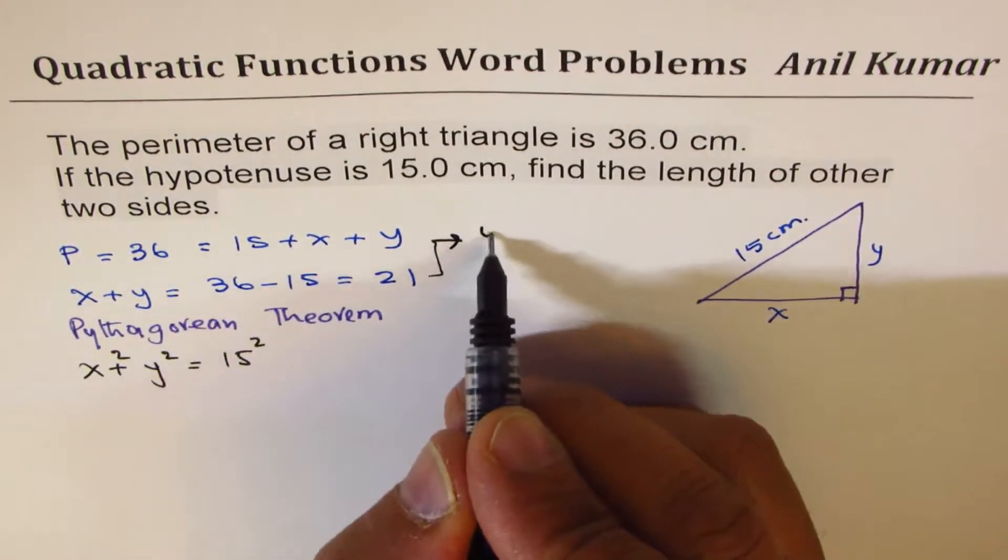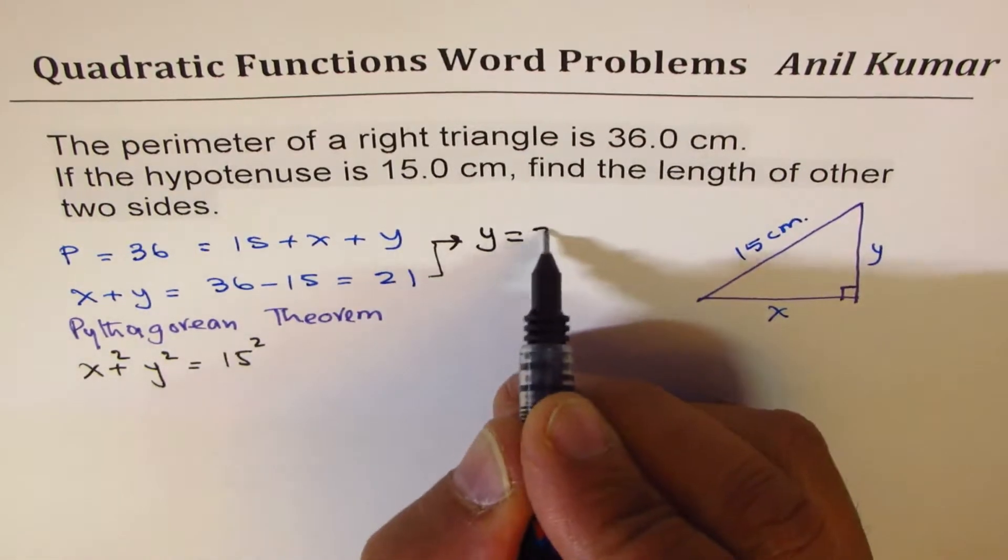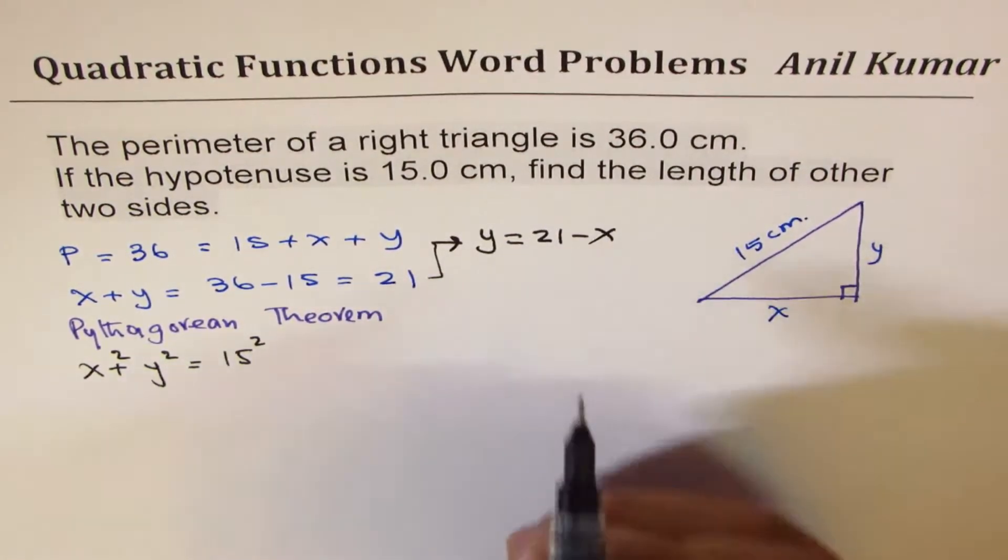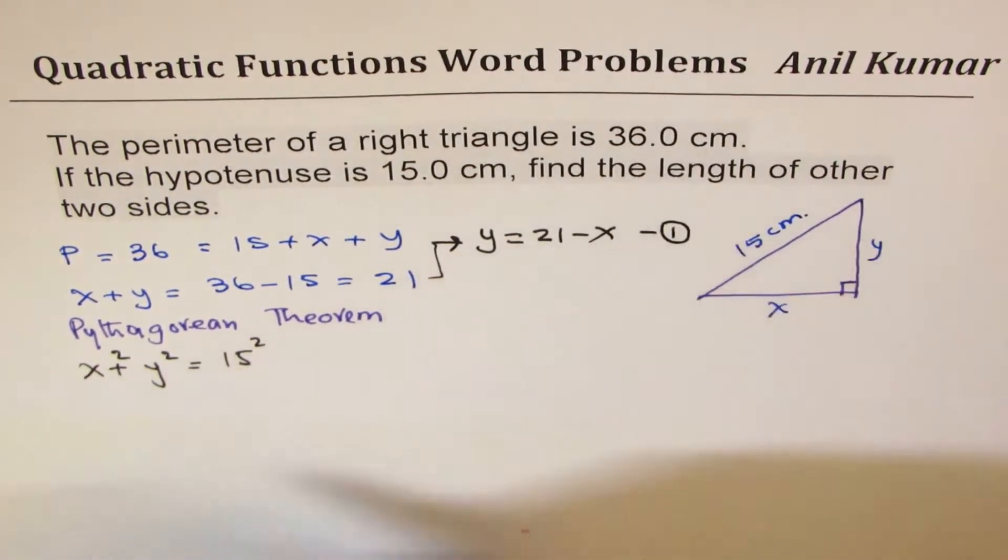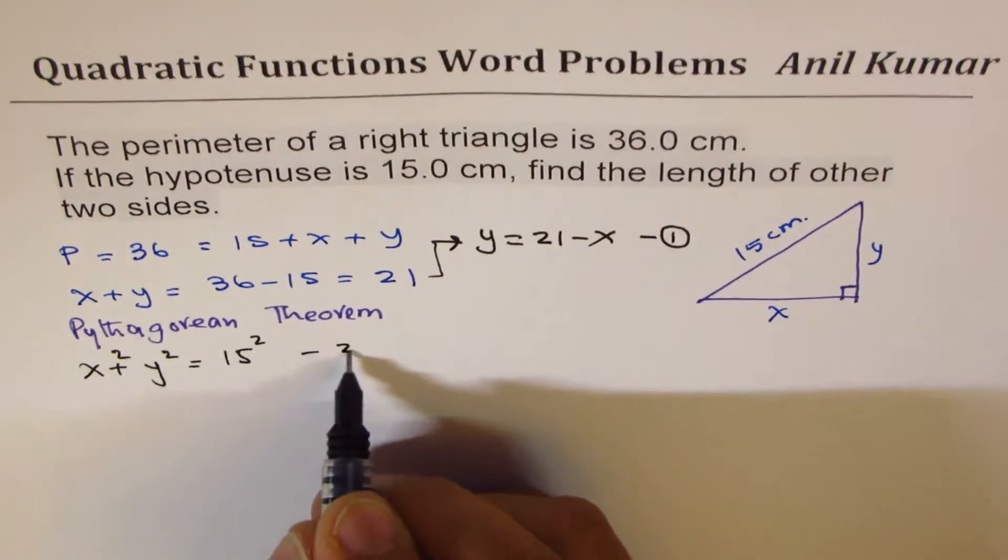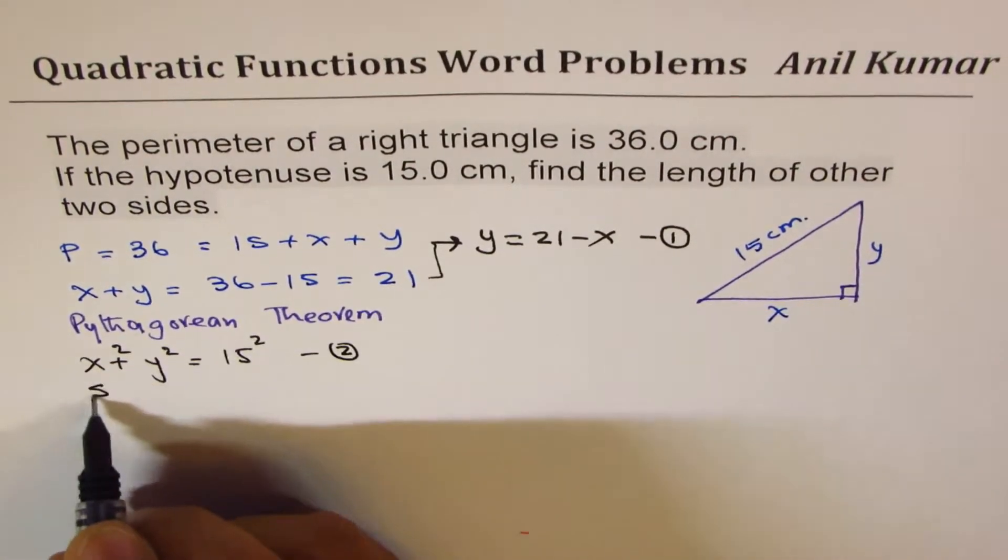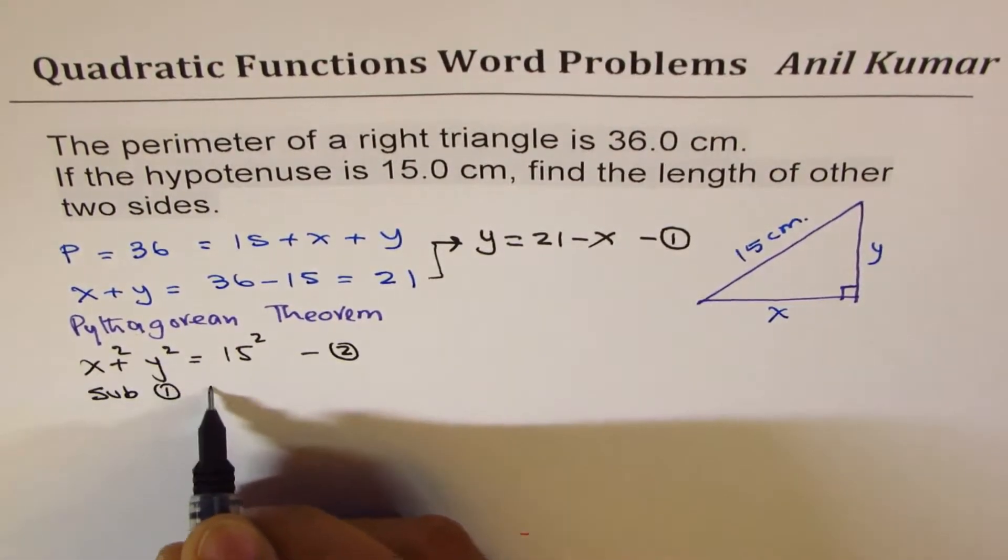From here we can also write Y in terms of X which should be 21 minus X. Let's call this as equation number one and we'll call this as equation number two. If I substitute equation number one in equation number two, what do I get?